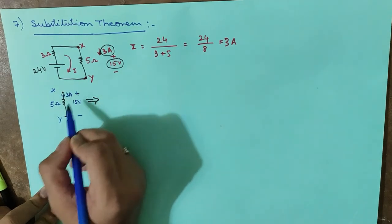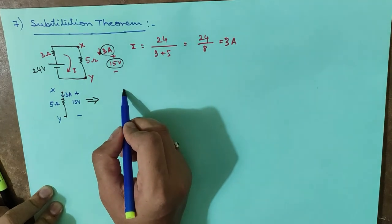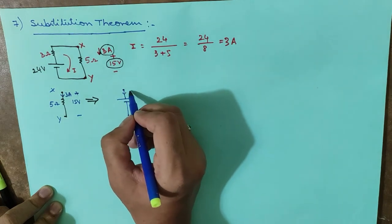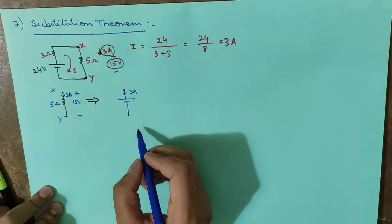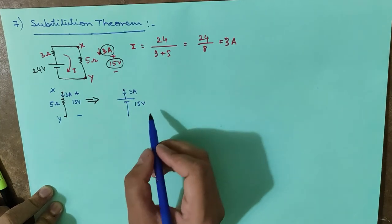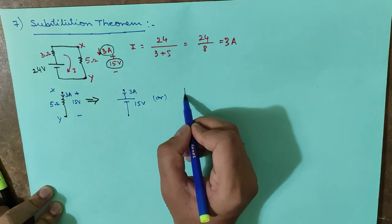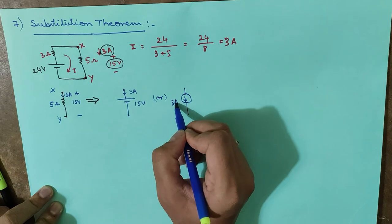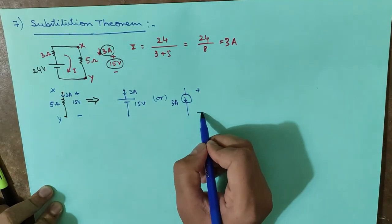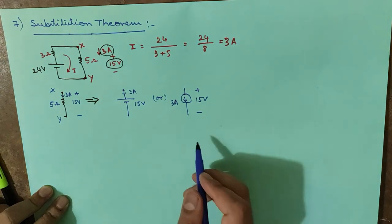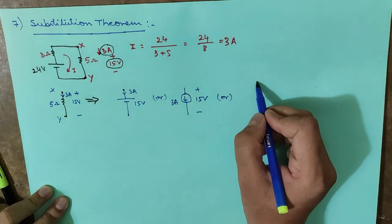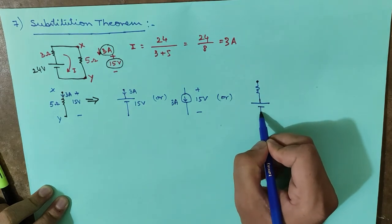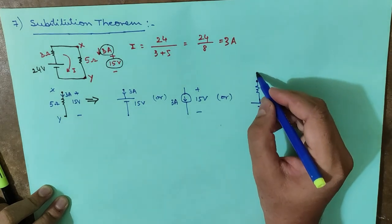I can simply replace this branch with a 15 volt battery allowing 3 amperes to pass through it. Or I can use a 3 ampere current source maintaining 15 volts. Or I can use a combination of one resistor in series with a voltage source — there are many possible combinations.